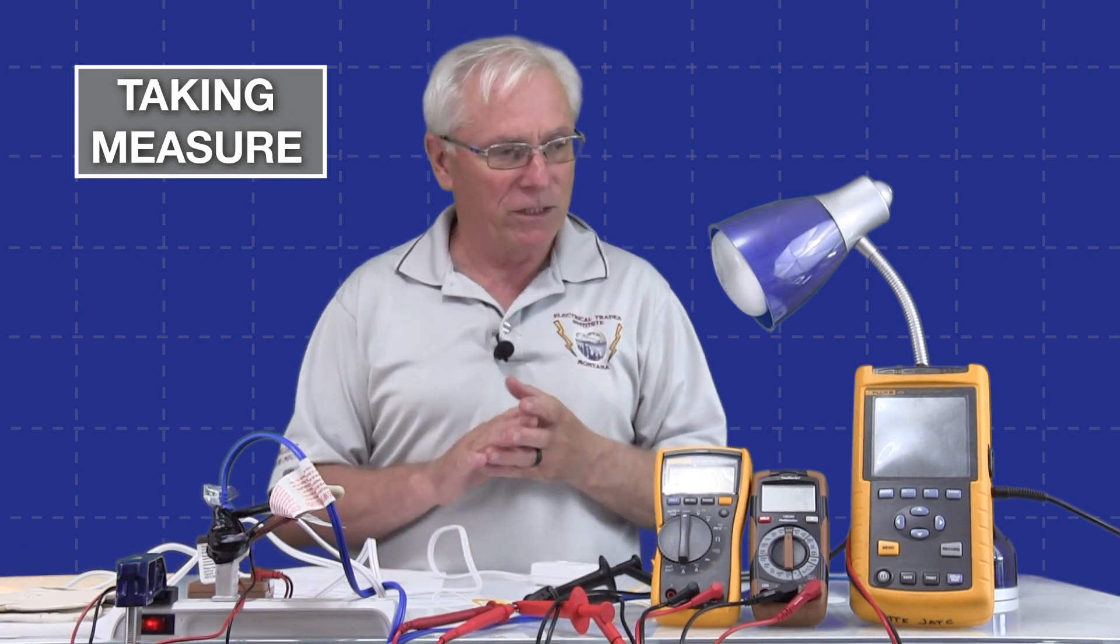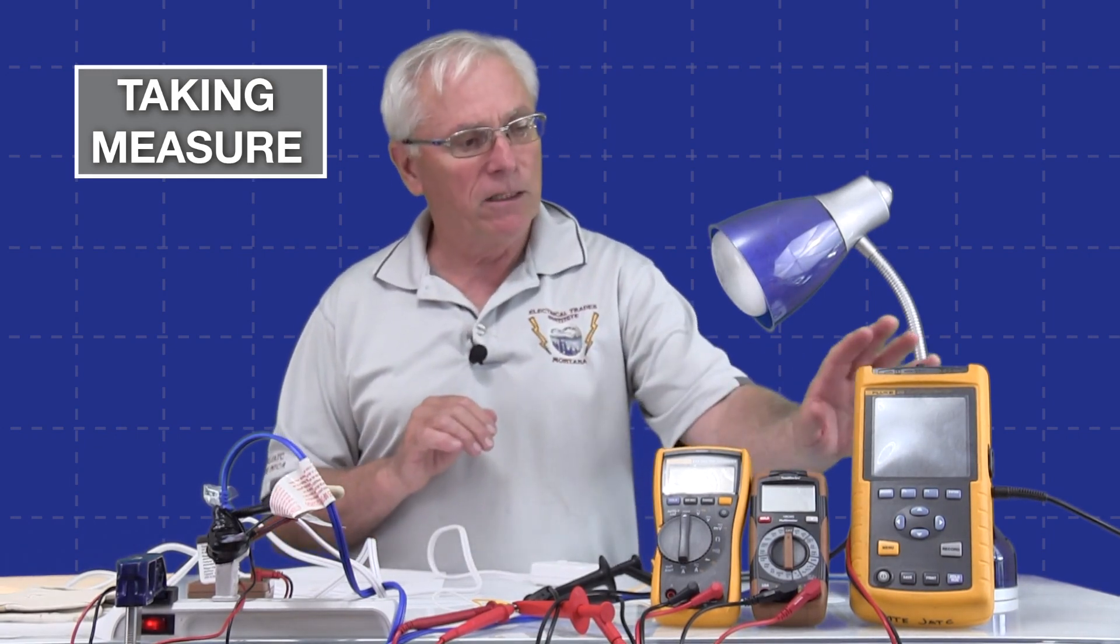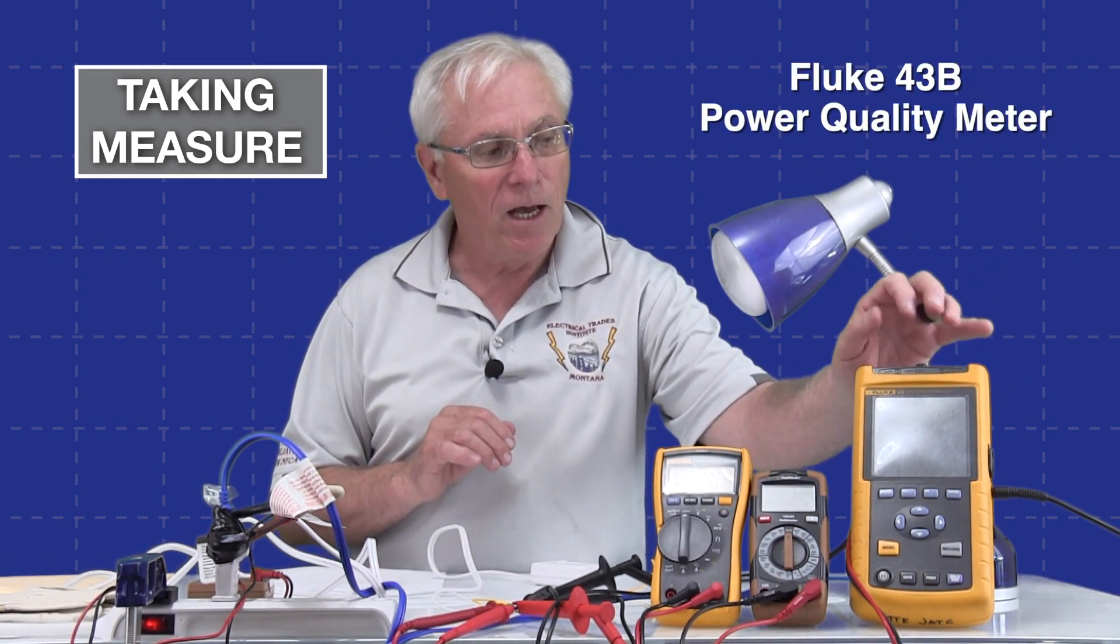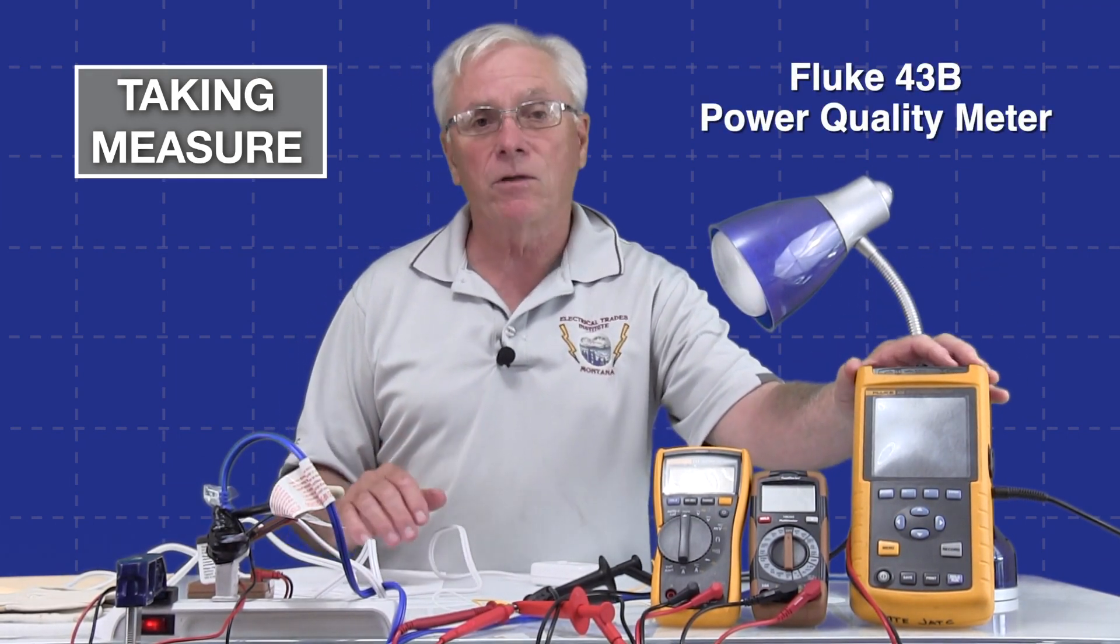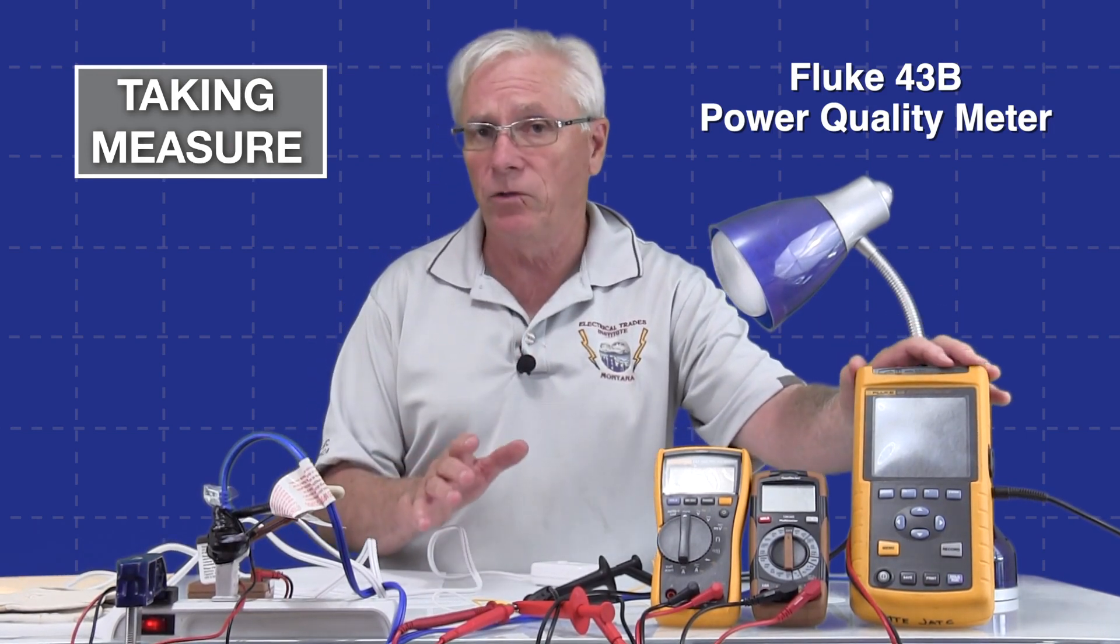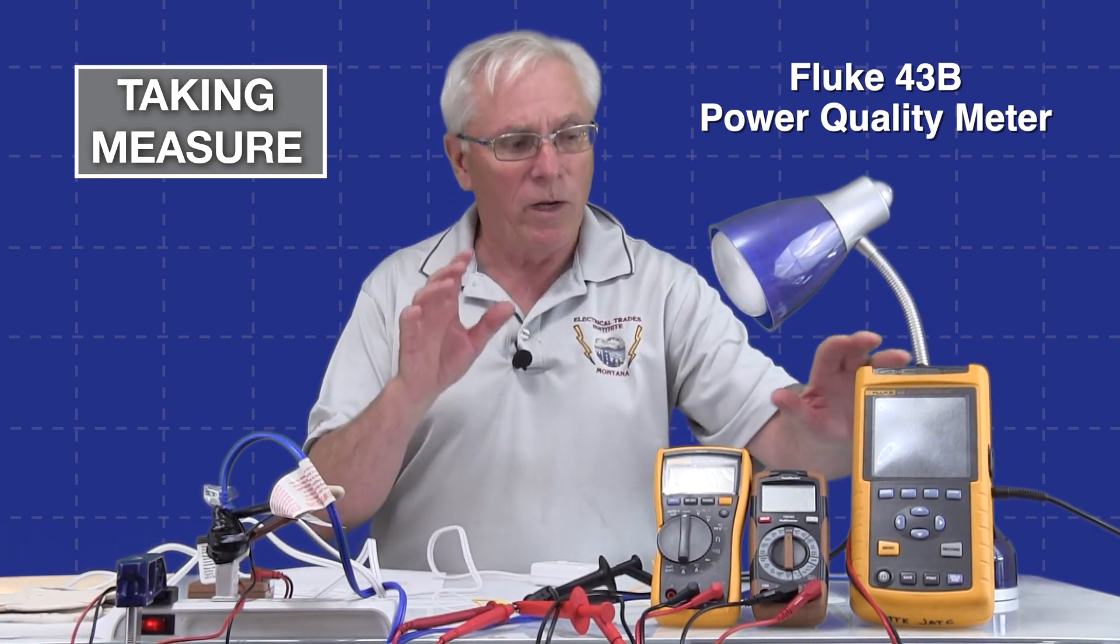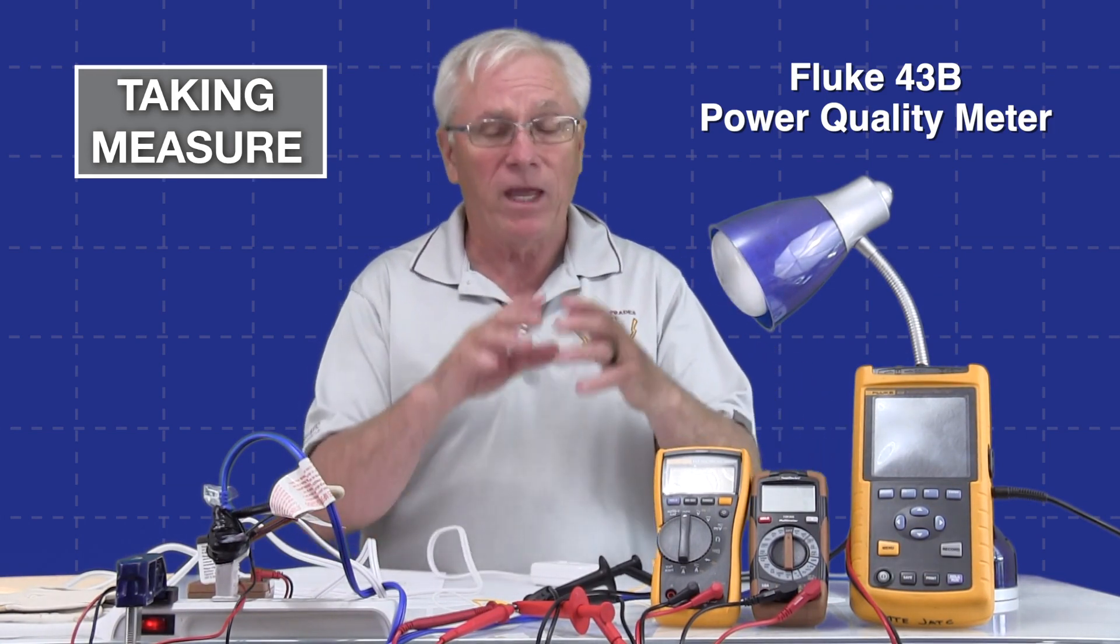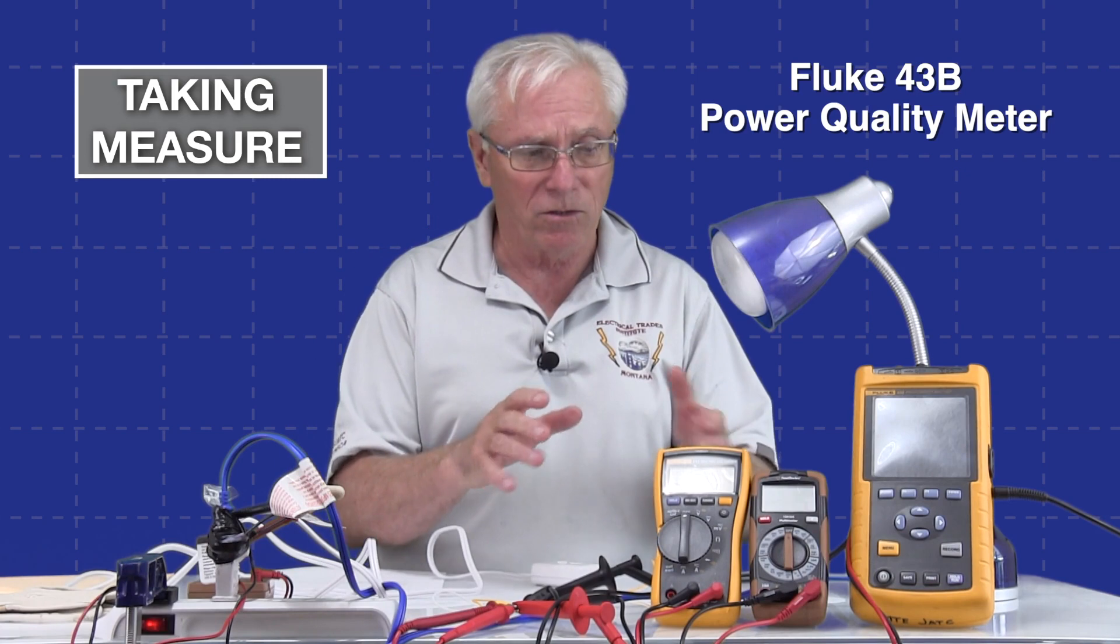The next thing we need to do now is take a look at our lab setup. We've got a whole bunch of good stuff here. The first thing we need to look at is this: a Fluke 43B power quality meter, which allows us to look at the sine wave. And that's exactly what we want to do today—we want to look at the sine wave so we can analyze what happens when you change the sine wave and why true RMS meters are so important.